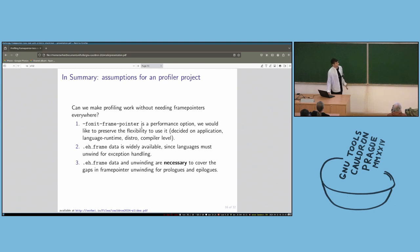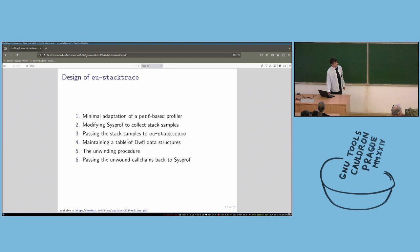In summary, can we make profiling work without needing frame pointers everywhere? Surely, yes. The basic assumptions for any project to fix this issue is that a frame point is a performance option. We'd like to preserve the flexibility for people to actually use it. In terms of the granularity you could decide it on, you could decide it on compiler and distro level and kind of force it on everyone or on application level. A frame data has been widely available for a while. And while a frame data, CFI of some sort and unwinding are necessary to cover the gaps where frame pointer unwinding isn't accurate. So that's prologs, epilogs, and library functions that use in line assembly.